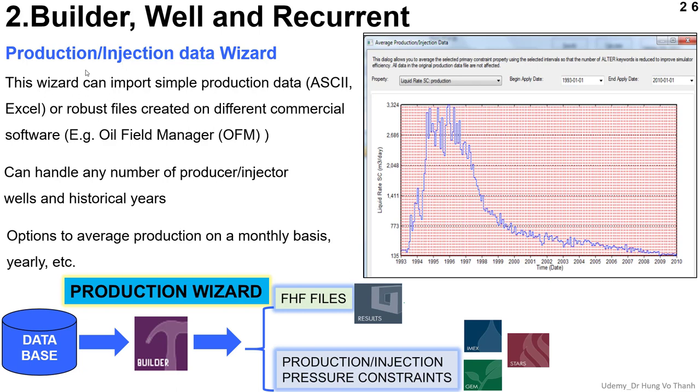By the Well and Recurrent Builder, the format to import for CMG is very diverse, such as the ASCII file, the Excel file. I can say the Builder makes it very easy for you to consider the input file in terms of production and injection data. You can generate this kind of information from one of the best software for oilfield management. We usually use Oil Field Manager to manage this kind of data.